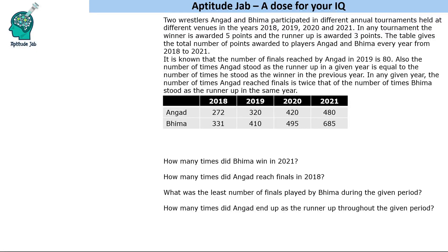Hello everyone, welcome to Aptitude. In this set we have a table given. There are two wrestlers, Angad and Bhim, who participated in different annual competitions held at different venues for the years 2018 to 2021. In any tournament, the winner is awarded five points and the runner-up is awarded three points.